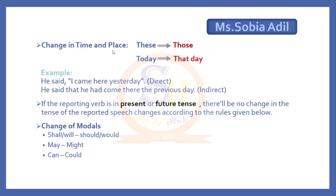The next rule is change in time and place words. Certain words need to be changed: 'these' changes into 'those', 'this' into 'that', 'today' into 'that day', 'yesterday' into 'the previous day'. For example: 'He said, I came here yesterday.' becomes 'He said that he had come there the previous day.' So the pronoun, tense, and time words are all changed accordingly.